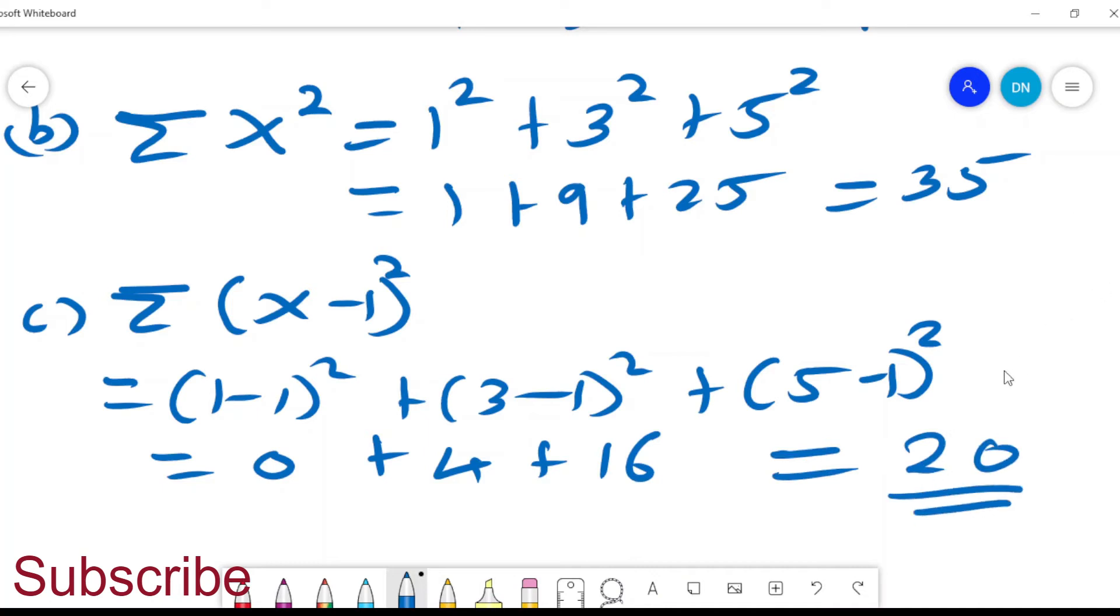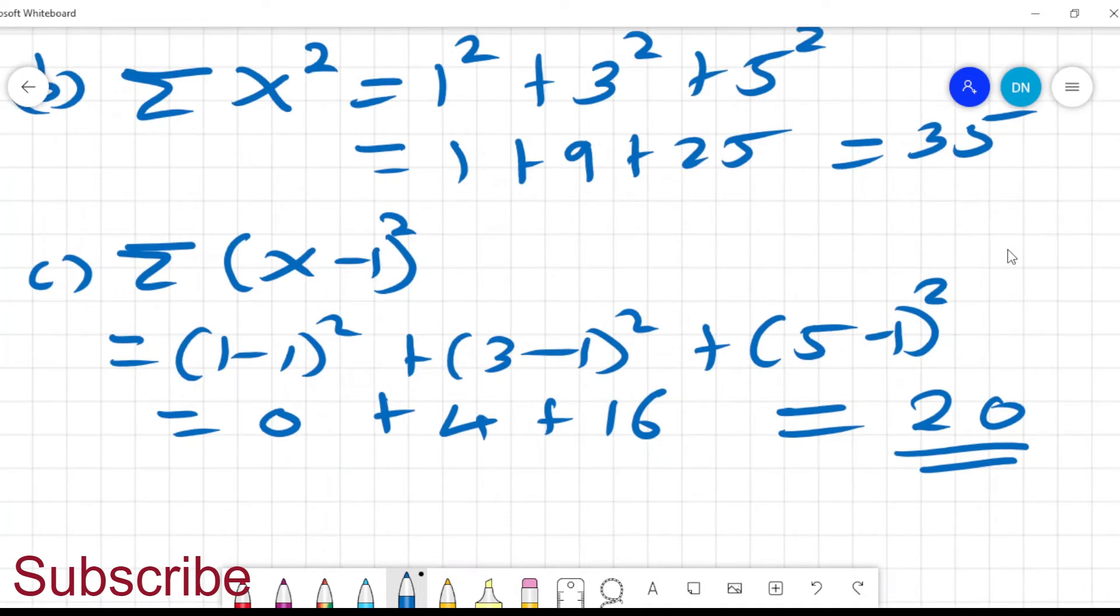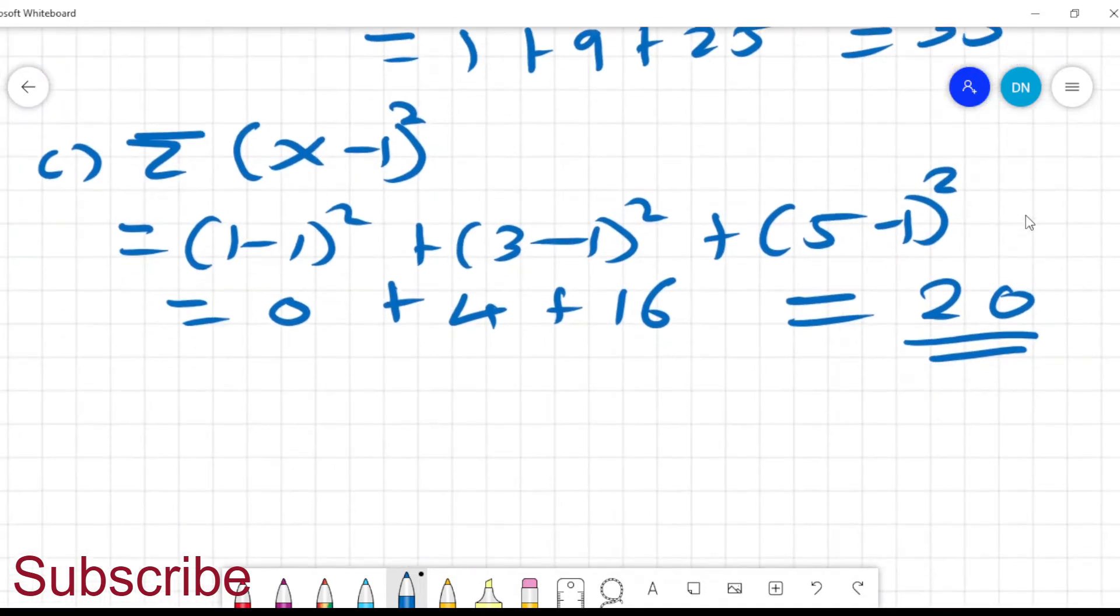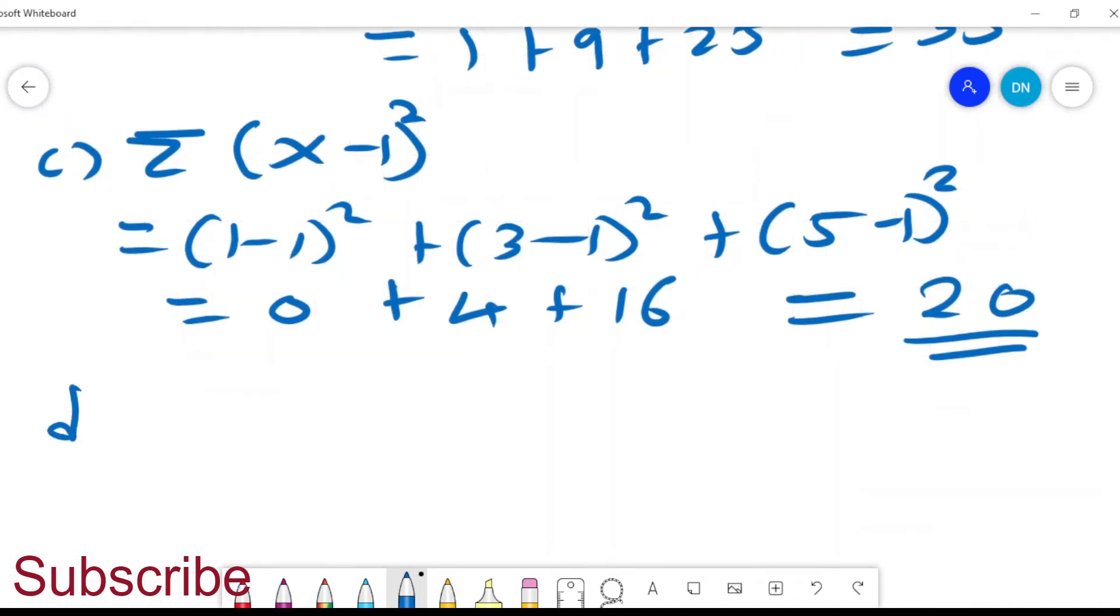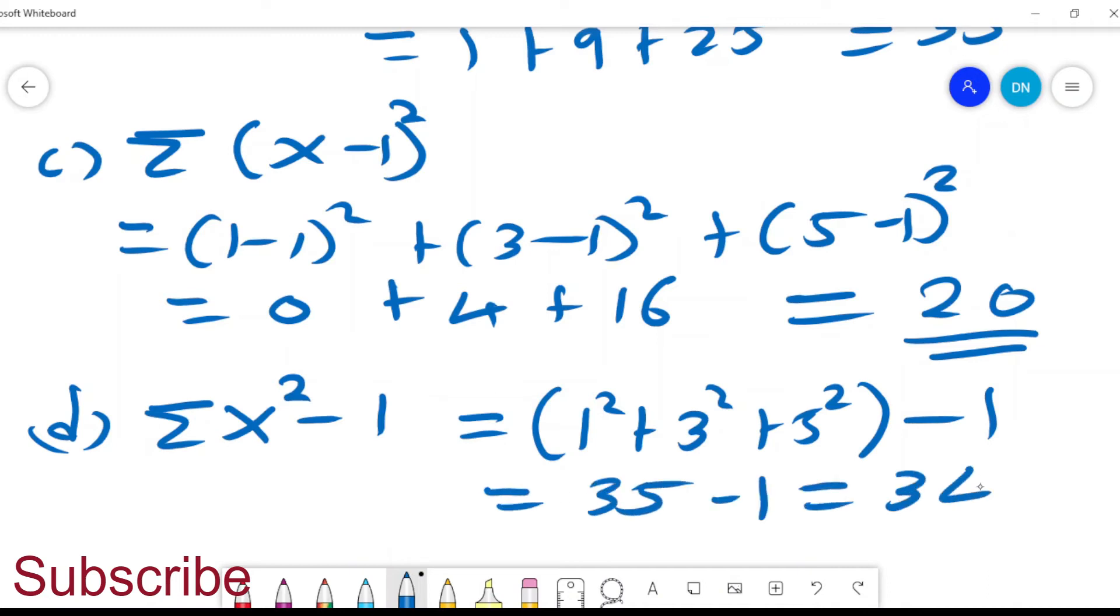You have to look keenly at what is being done. That would be very different if we had written summation of x squared minus 1. We are squaring x, which is 1 squared plus 3 squared plus 5 squared, and then you subtract 1. We saw this is 35 minus 1, which is 34.